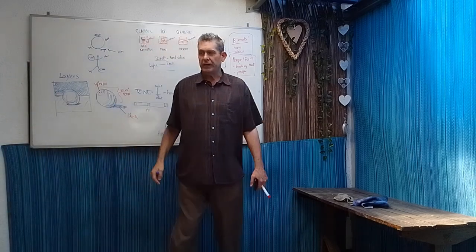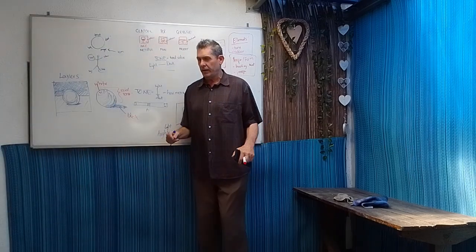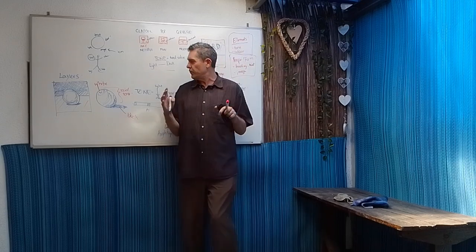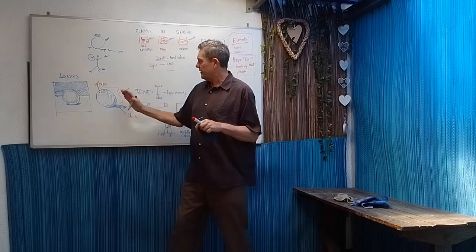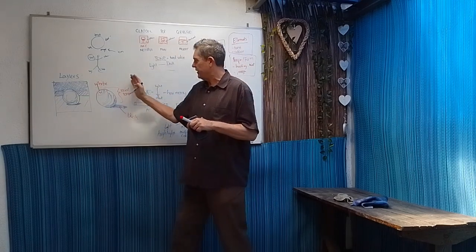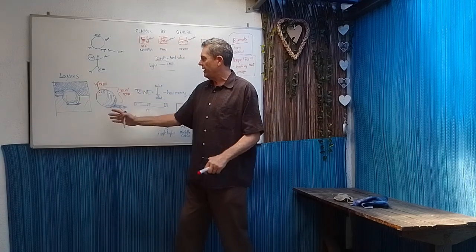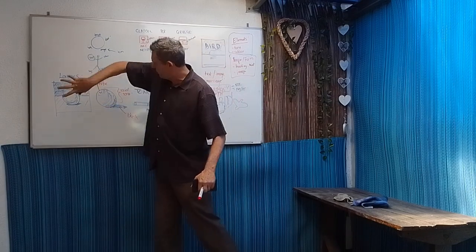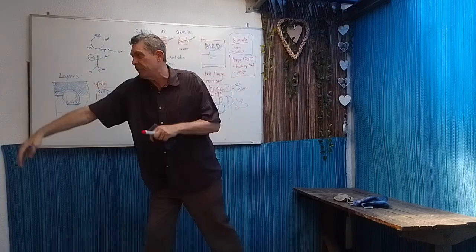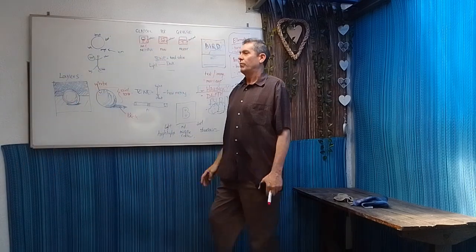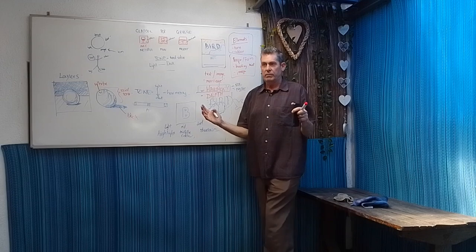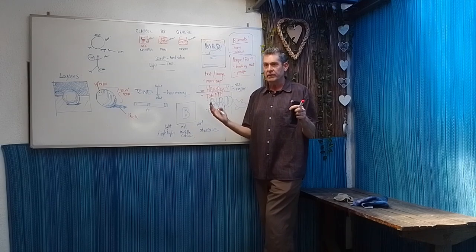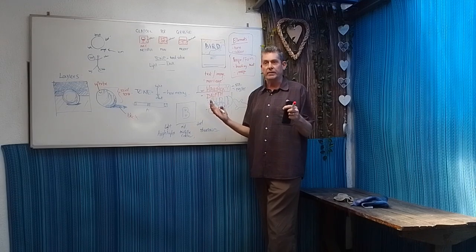Light can come from the left, from the front, but when it comes from the top and there's depth — wow, now you're not getting confused, there's harmony. When light comes from the top and there are layers going to the back, that's how you create depth.